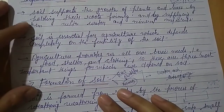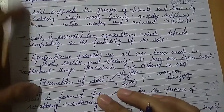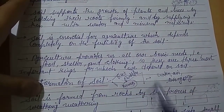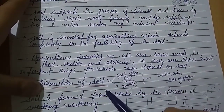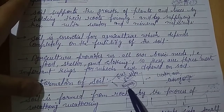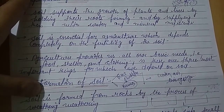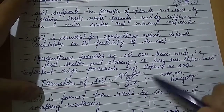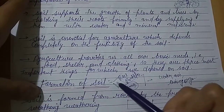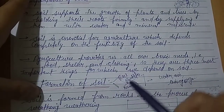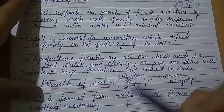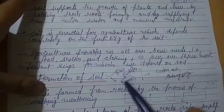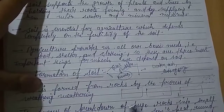Next is the formation of soil. Soil contains rock particles, humus, water, air, and living organisms. For the formation of soil, there are two important things: rock particles and humus. Rock particles are formed from large rocks when they break down into small pieces.